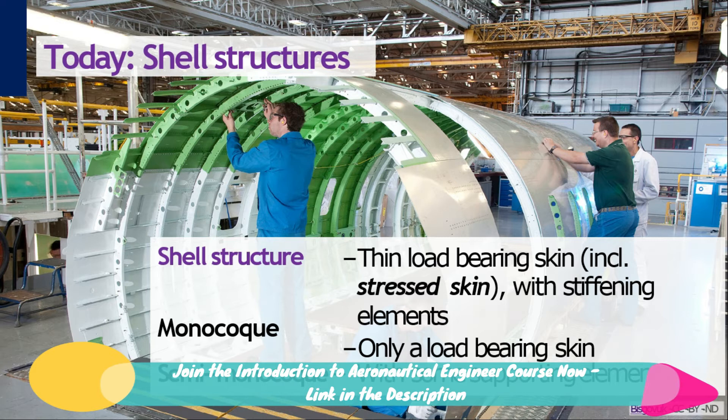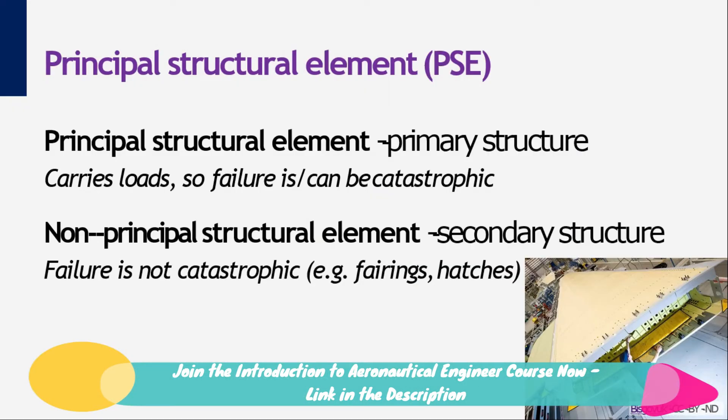A structure like this we call a shell structure or a semi-monocoque structure. The skin is part of the structure, so it carries load and it protects. This is in contrast to the linen or textile skins used in the early periods of flight. Note that a true monocoque has only a skin which takes up all loads — a perfect example of that is a bird's egg. Despite the fact that the skin is carrying load, not all structural components participate evenly in the load distribution.